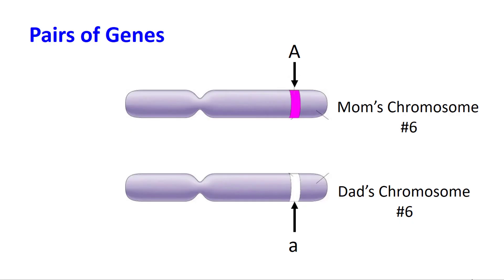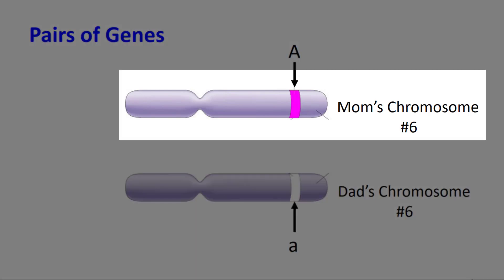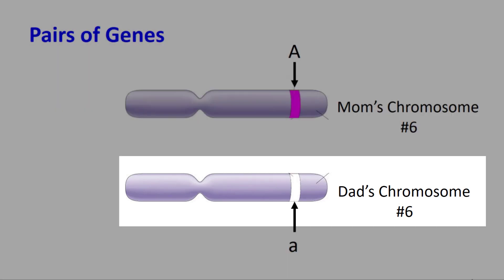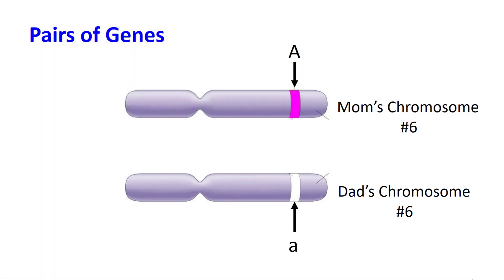Here's an example of the genotype — this pairing of genes. In mom's chromosome, chromosome 6 at the top, let's pretend you got a dominant gene, labeled capital A. And from dad's chromosome, that same gene, you got a recessive version of it, labeled lowercase a. That's the pair of genes.